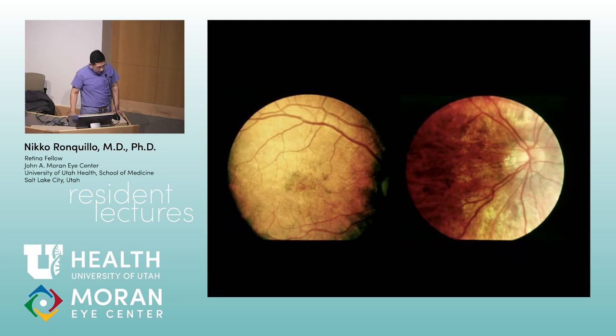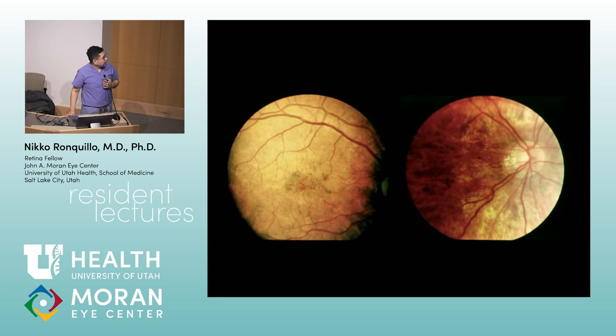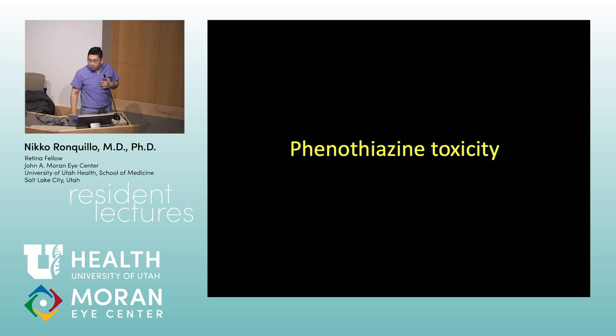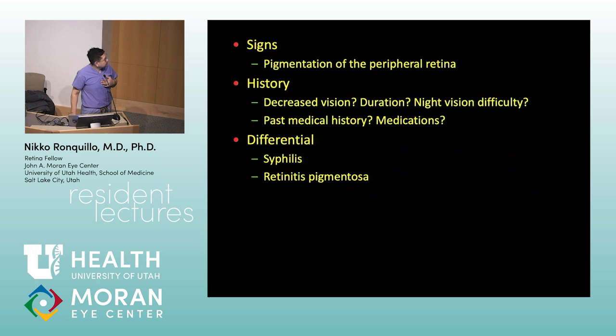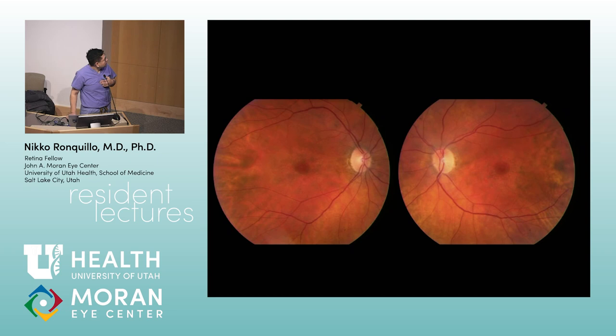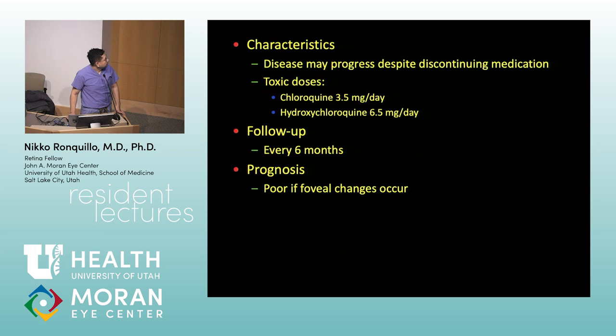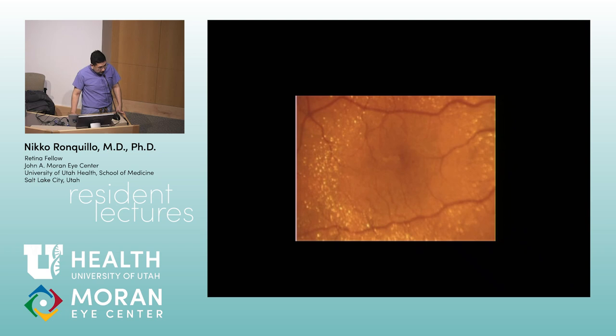Next — differential for pigmentary retinopathy. This is phenothiazine toxicity. Phenothiazines include chlorpromazine and thioridazine — the old antipsychotics. Next — bullseye maculopathy from medication toxicity: plaquenil (hydroxychloroquine) or chloroquine. Dosage thresholds are highly testable.